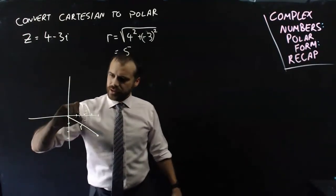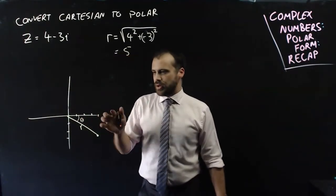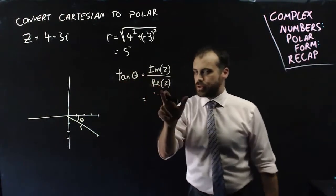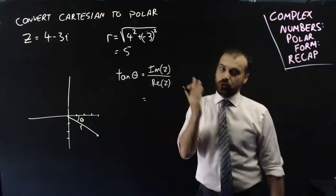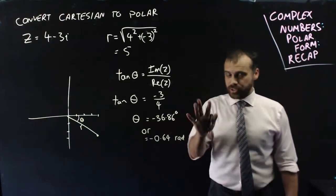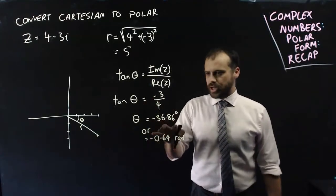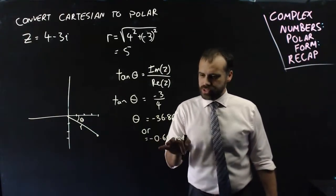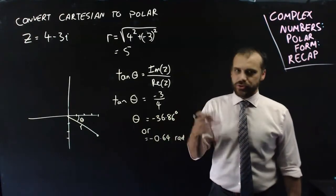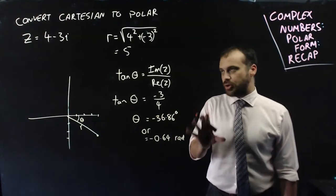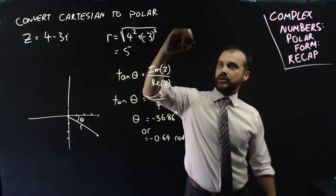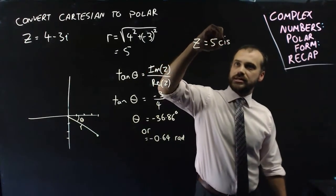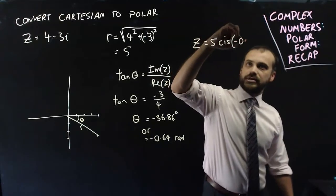Now I just need to find this angle here and it's going to be negative. So if I need to find that angle, it's the same every time. Tan theta equals the imaginary component over the real component, and then adjust for whatever quadrant you're in. Now if the numbers were neat, I'd do this calculator free, but they're not neat. So I put that into my calculator and I get negative 36.86 degrees or negative 0.64 radians, depending on what mode your calculator is in and what's being asked of you. So we can finally give this z in polar form. It's equal to 5 cis, and let's put it in radians, negative 0.64.